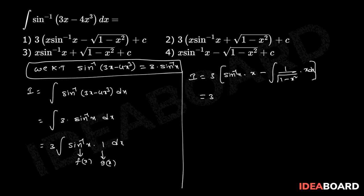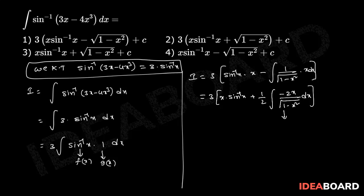That equals 3 into x into sin inverse of x, and then multiplying and dividing by 2, we get 1 by 2 into integration of minus 2x divided by square root of (1 minus x square) dx. Here we are using the formula for integration.